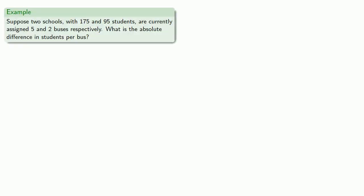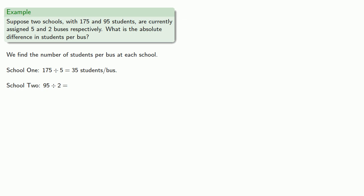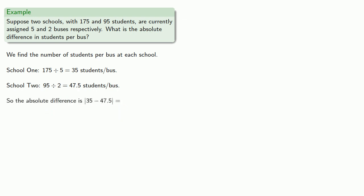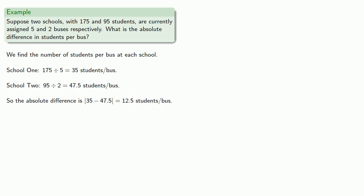For example, let's say we have two schools with 175 and 95 students respectively, who are currently assigned five and two buses respectively. What's the absolute difference in students per bus? At school one, there are 175 students with five buses, so there are 175 divided by five, or 35 students per bus. Meanwhile, school two with 95 students among two buses has 47.5 students per bus. So the absolute difference works out to be 12.5 students per bus.